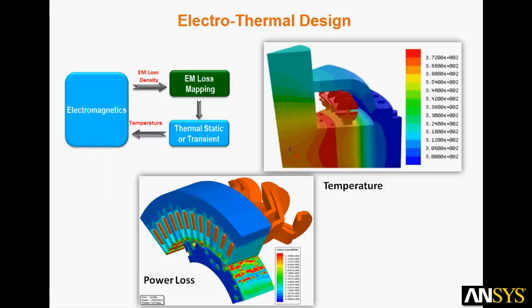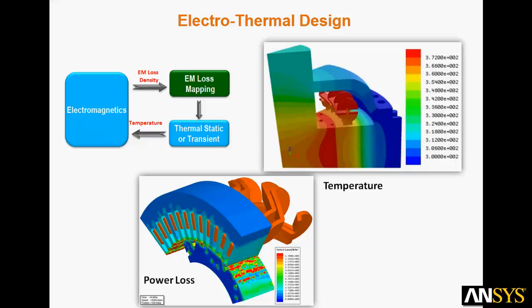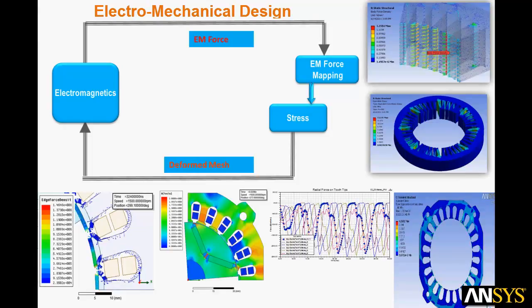The first step is electrothermal design. Maxwell is used to simulate electromagnetic fields and the associated electromagnetic power loss density. Automated routines map these losses to the ANSYS CFD, Computational Fluid Dynamics Solver, for static or transient thermal simulations. The resulting temperatures from the thermal analysis can be passed back to Maxwell to adjust material properties so that additional corrections to the electromagnetic field may be computed.